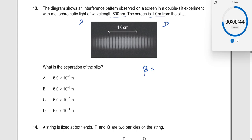So very simple. The formula here is nothing but beta equal to lambda D by small d. So if you want to find this value of d, you should get the value of beta. What is beta? Beta is the fringe width.